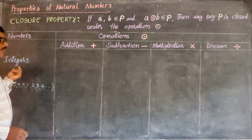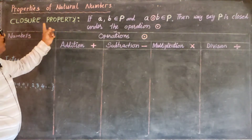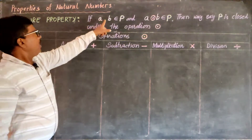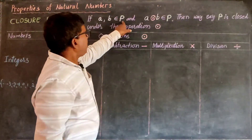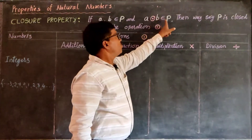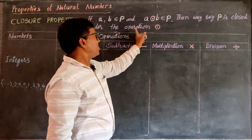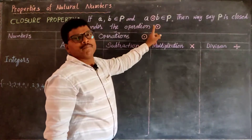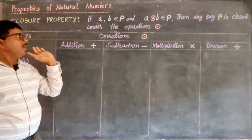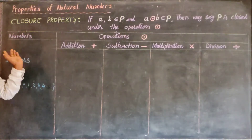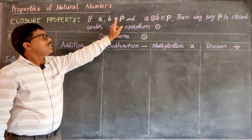Closure property of integer numbers. If A and B belong to set P and A operation B belongs to P, then we say P is closed under the operation. Here we are taking P as integers.